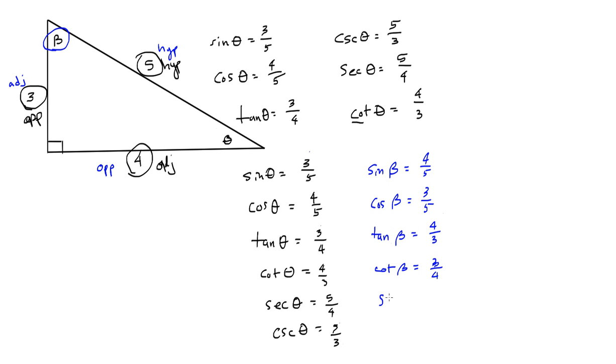Secant is the reciprocal of cosine. So that's 5 over 3, which is the length of the hypotenuse over the adjacent side. And cosecant, which is the reciprocal of sine, is going to be hypotenuse over opposite, or 5 over 4.